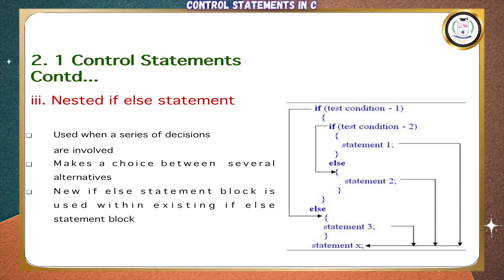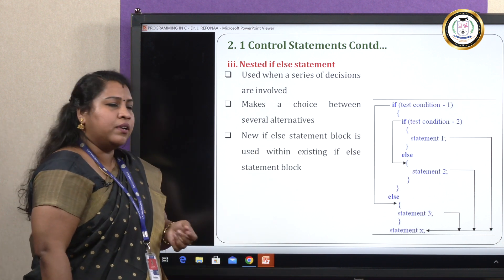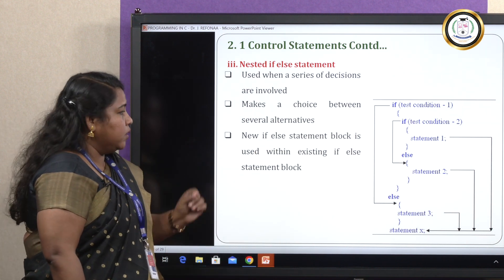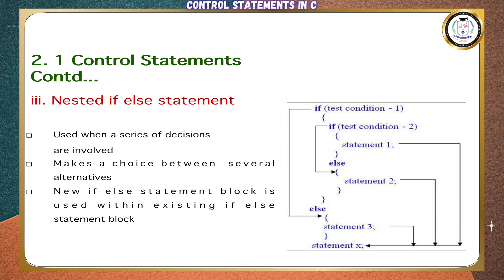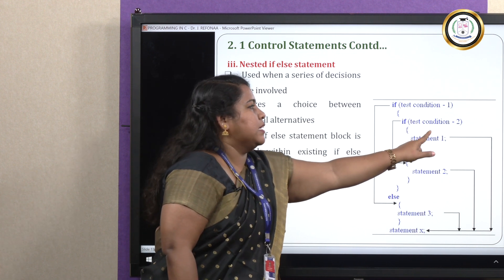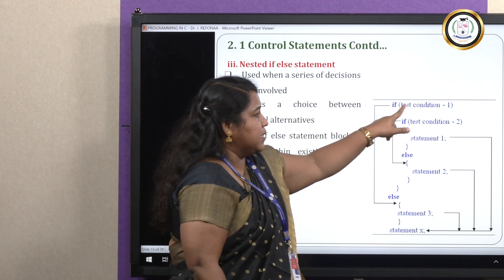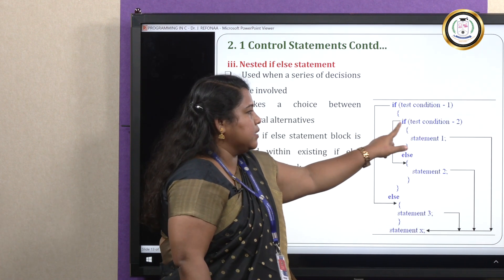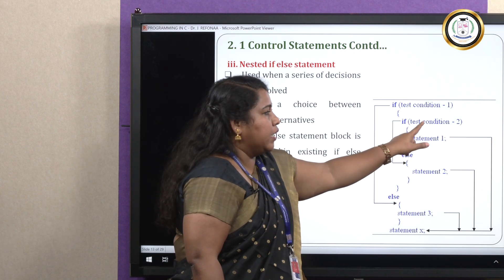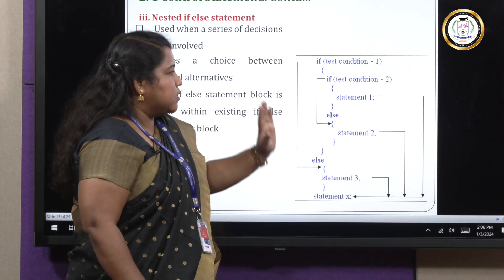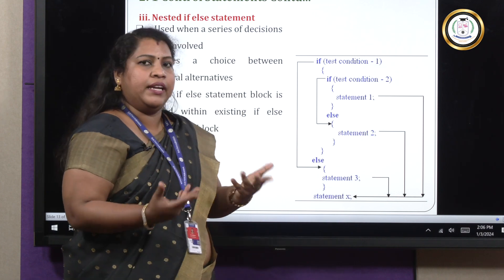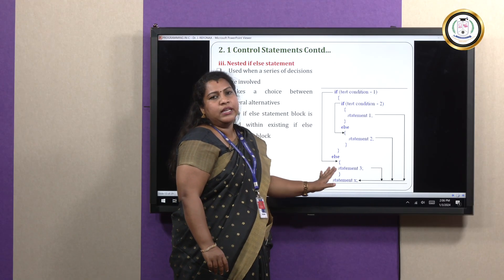Next is the nested if-else statement. Here we use a series of decisions involving multiple conditions and making a choice between several alternatives. A new if-else block is used within an existing if-else block. Looking at the syntax: first we have an outer if with a condition. If that condition is satisfied, it enters the next inner if block and checks test condition 2. If condition 1 is true, it checks condition 2; if condition 2 is true, the true statement block executes; else the false statement block executes. If the first condition itself fails, it goes to the last else block and executes that statement.